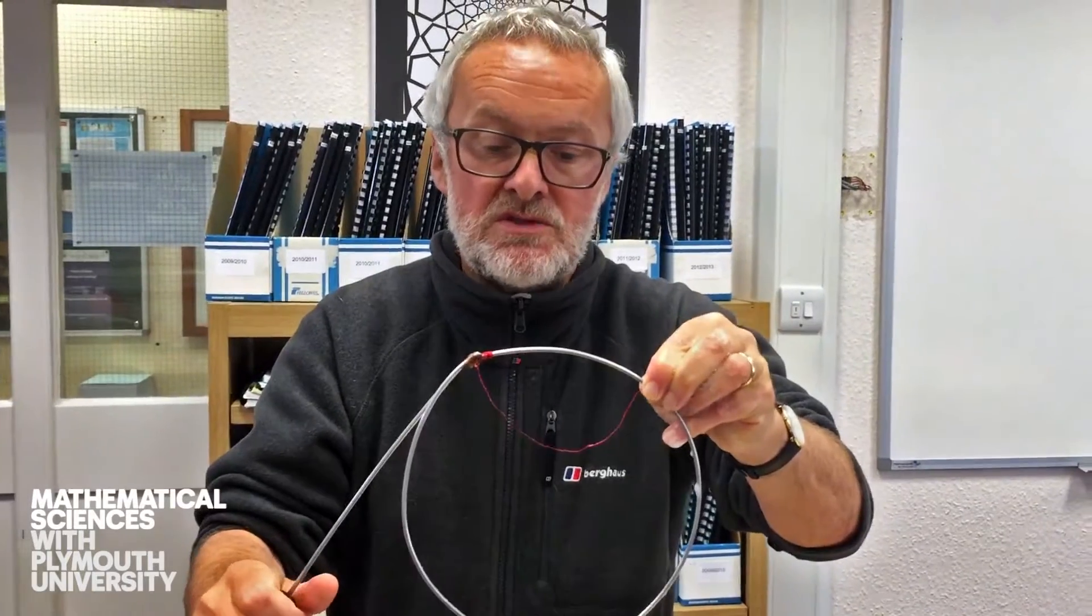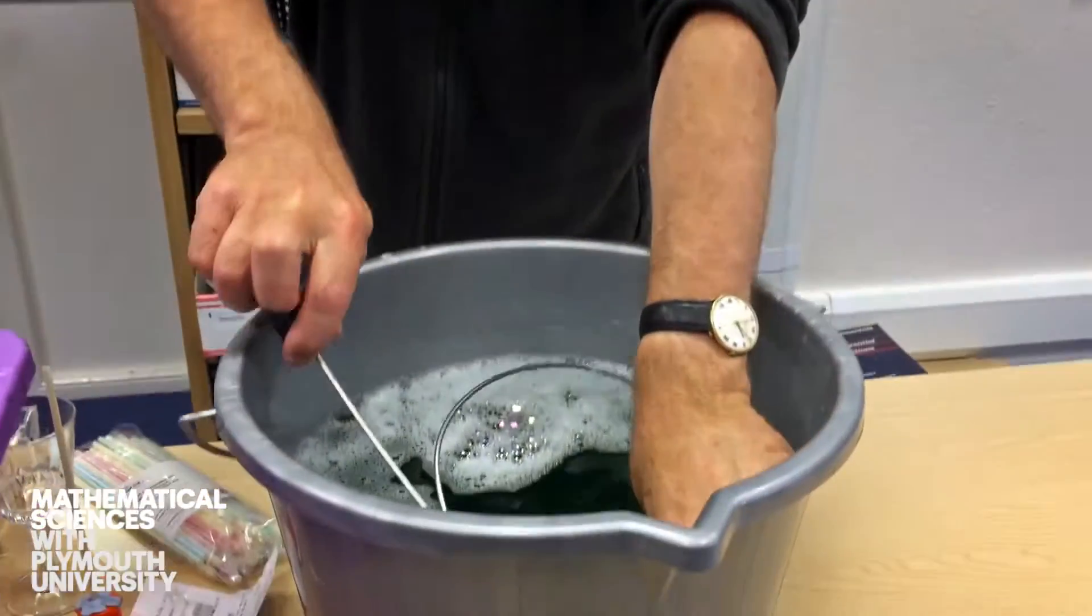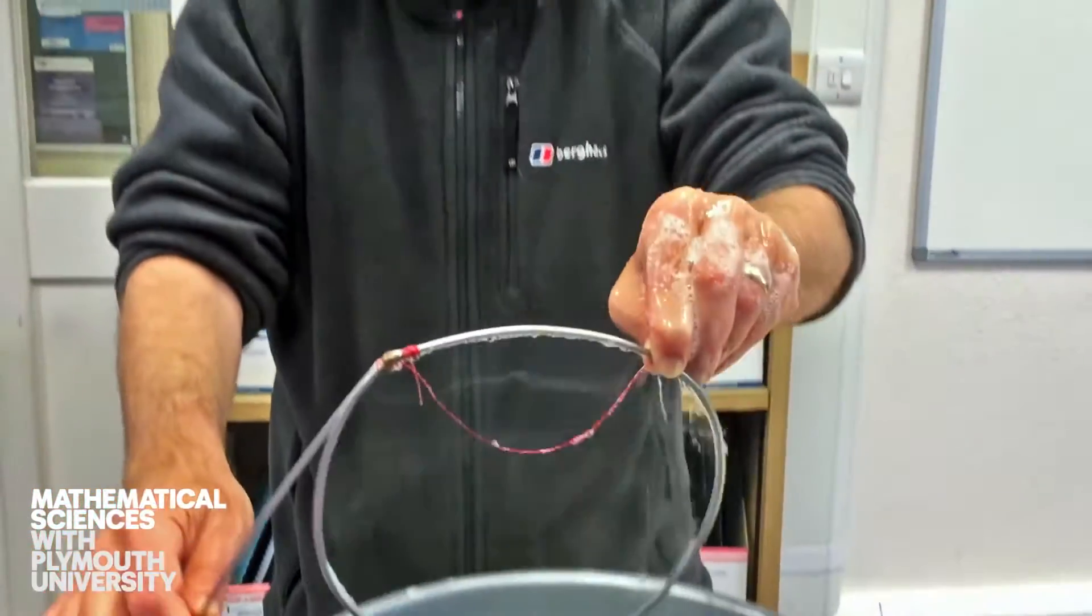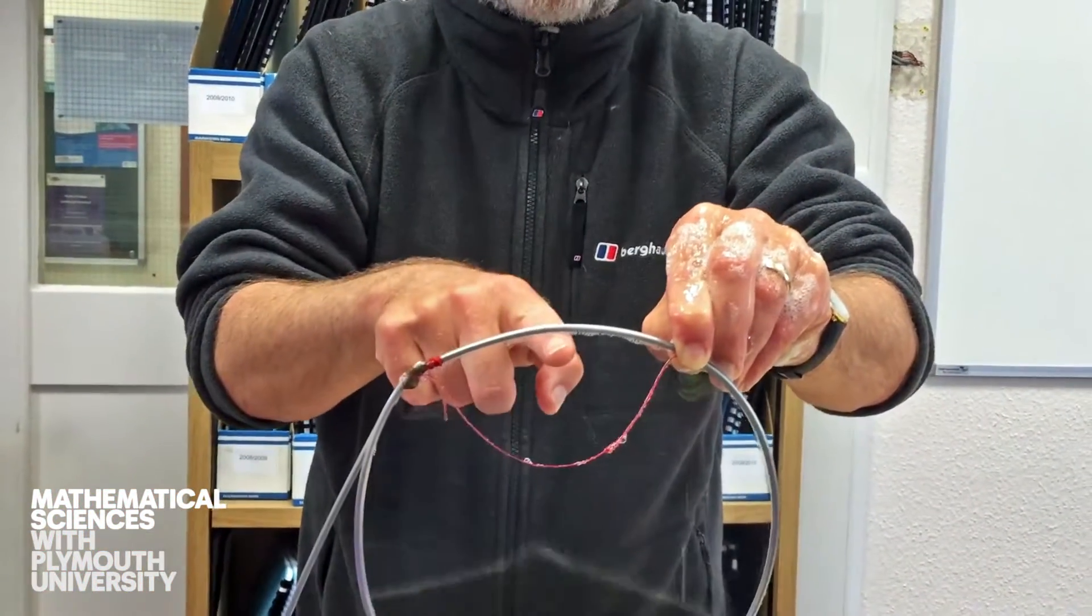Here it's tied, here it's loose. I can just pull it along and dip it into bubble mixture, pull it out, and then with the dry finger I'm going to pop it there.